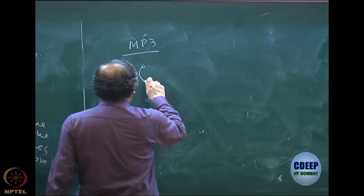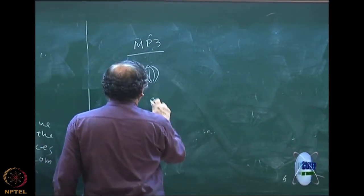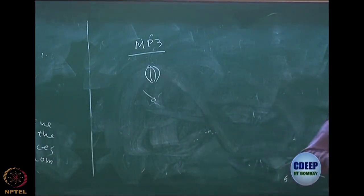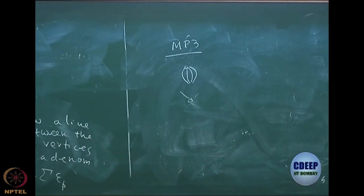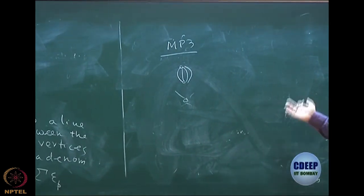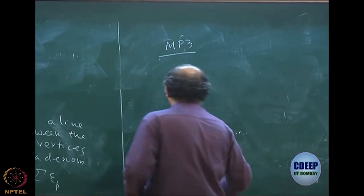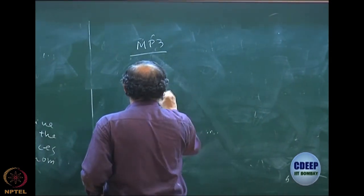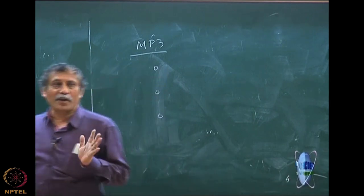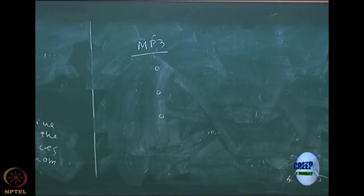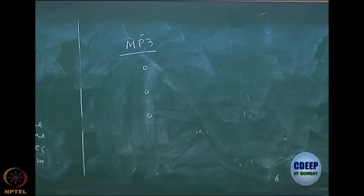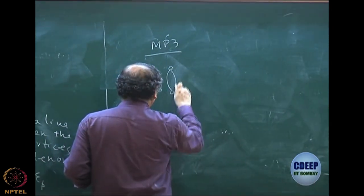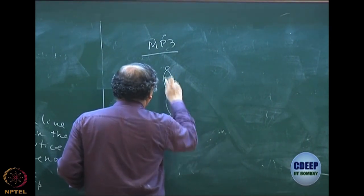Remember, you cannot draw a diagram like this because that is unlinked and open — not even closed, because these four hands are not shaken. So you cannot do this. This is really diagram drawing at this stage: draw diagrams such that they are linked and closed.